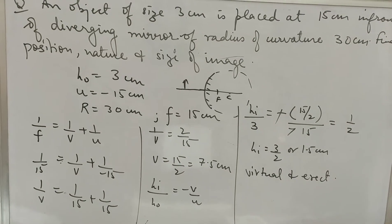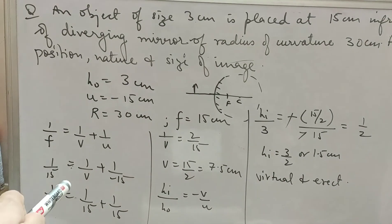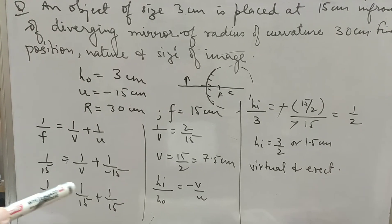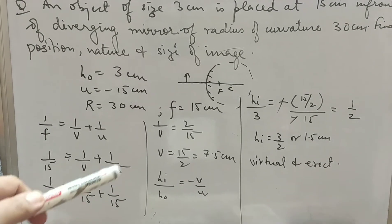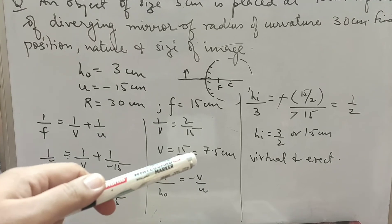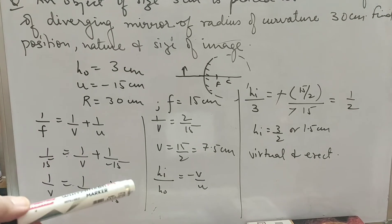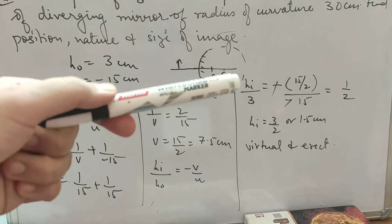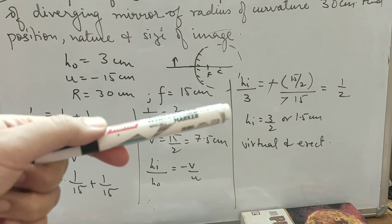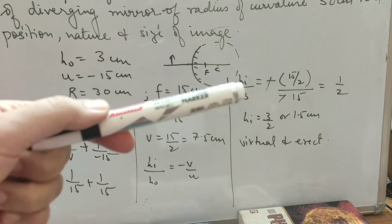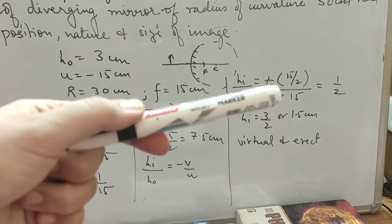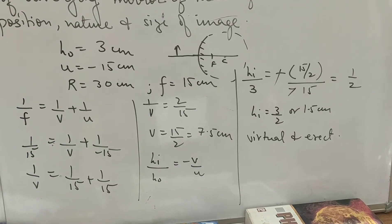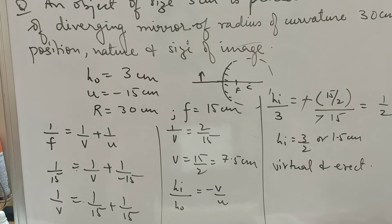Putting values in the mirror formula 1/f = 1/v + 1/u, with f = 15 and u = minus 15, rearranging gives v = 15/2 = 7.5 cm. Then HI/HO = minus v/u gives HI = (minus 15/2 × 3)/(minus 15) = 1.5 cm positive.